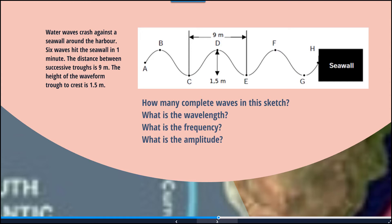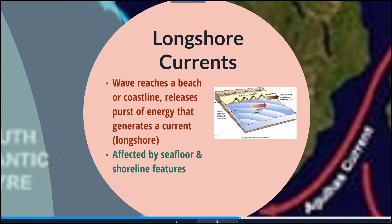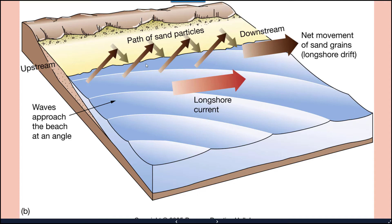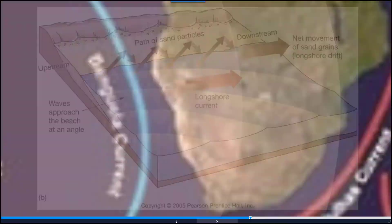Longshore currents are defined as waves that reach a beach or coastline and release bursts of energy that generate a current along the shore. This is affected by the sea floor and shoreline features. There is a net movement of sand grains that shift along with longshore drift. You've probably felt this before if you've been at the beach — you're right in front of your blanket, look up after a while, and you've shifted down the beach. That's the longshore current moving you.